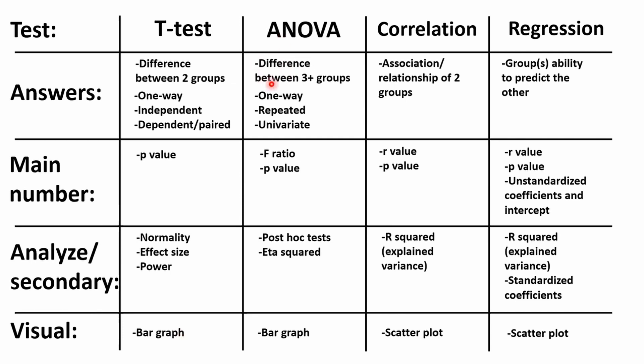ANOVAs are how you compare the differences between three groups. A one-way ANOVA would compare the difference between third, fourth, and fifth grade on jump height. A repeated measures ANOVA would be where the groups are related — for example, time point one, time point two, and time point three on jump height throughout a training cycle. A univariate ANOVA works like a two-by-two design: you have boys and girls, and then fourth and fifth grade, giving you four groups — boys fourth grade, boys fifth grade, girls fourth grade, girls fifth grade — but you're testing them on one outcome measure, like jump height.